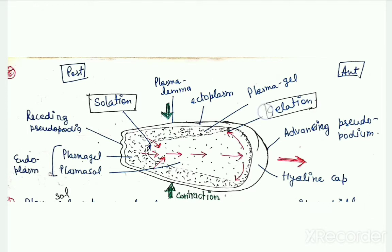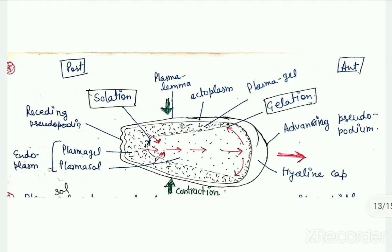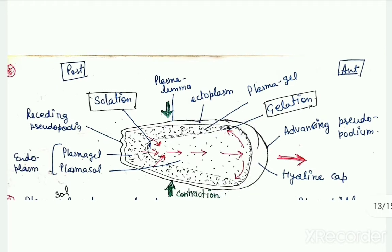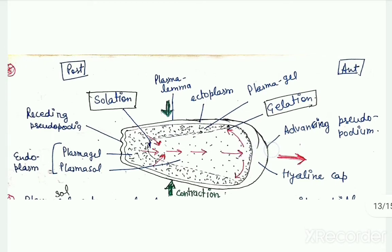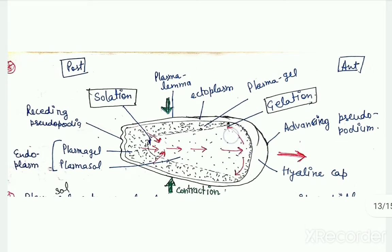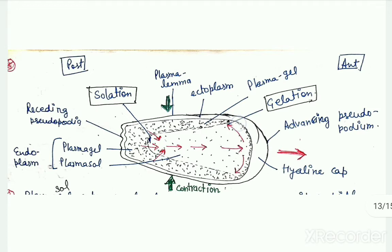In this case, there are two processes here. One is gelation: continuous gelation which occurs at the periphery of the pseudopodium. At the pseudopodium tip in the periphery, sol continuously gets converted into plasma gel.